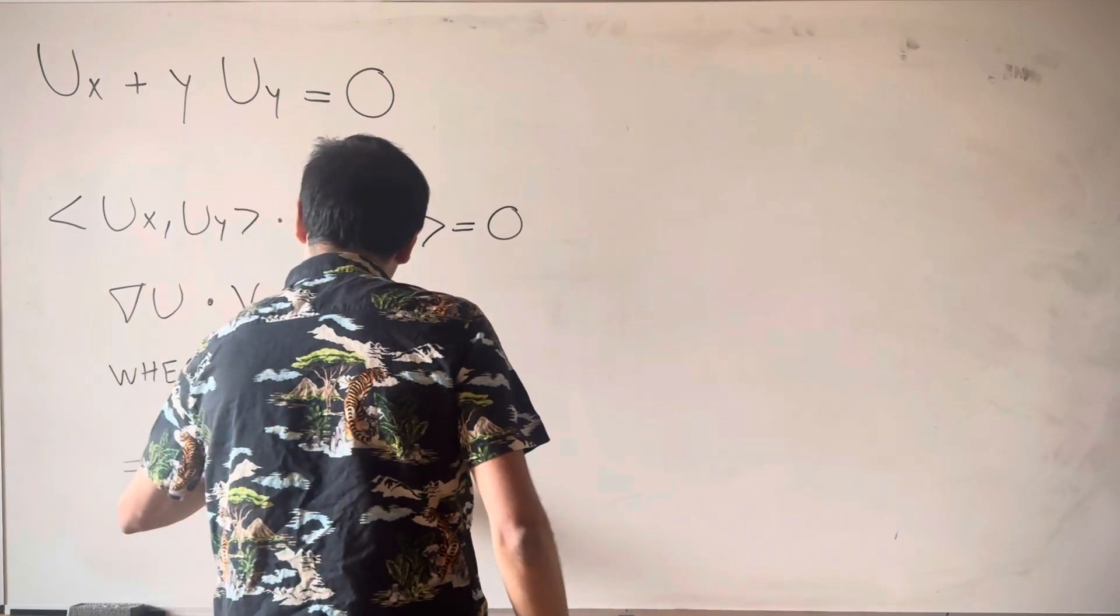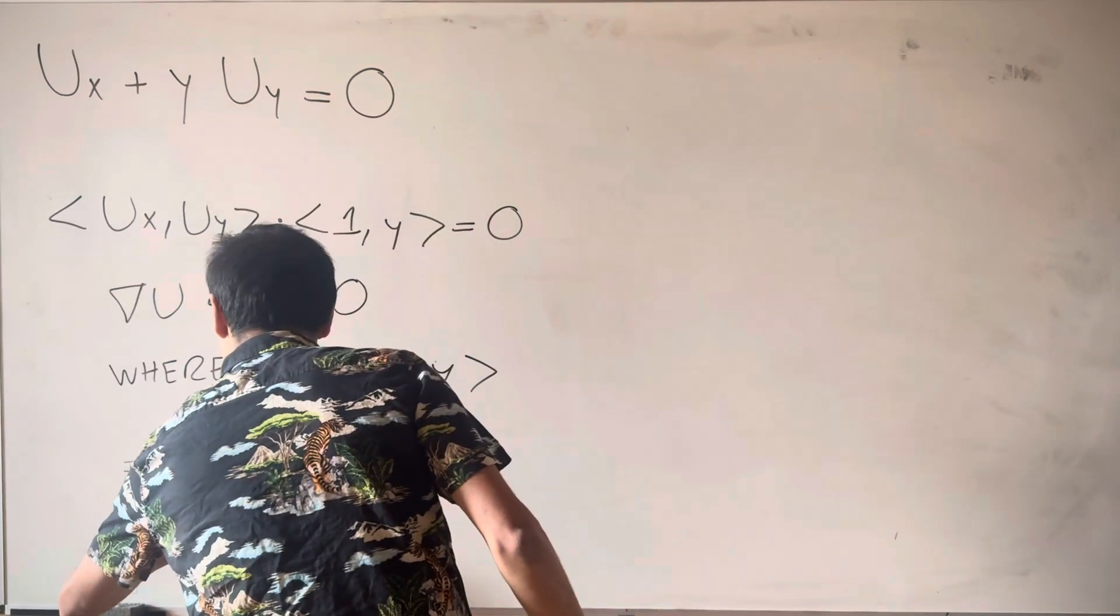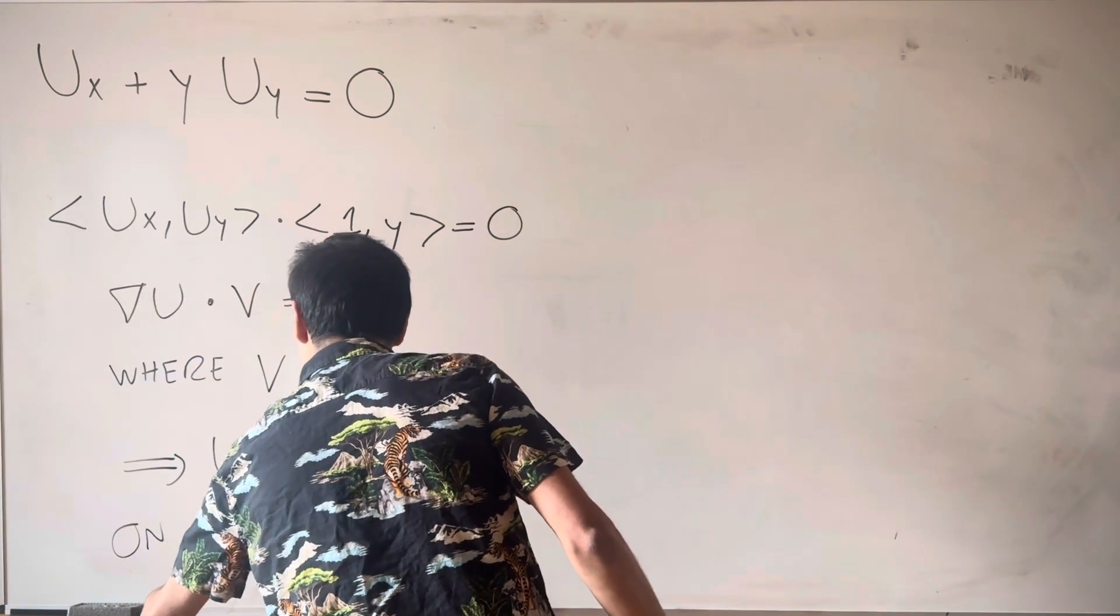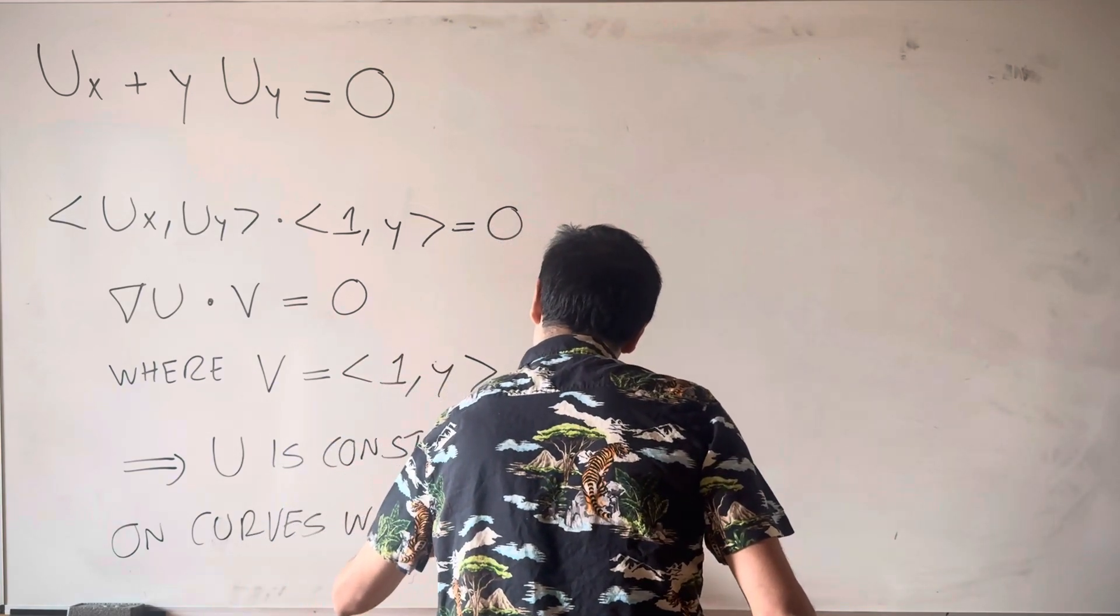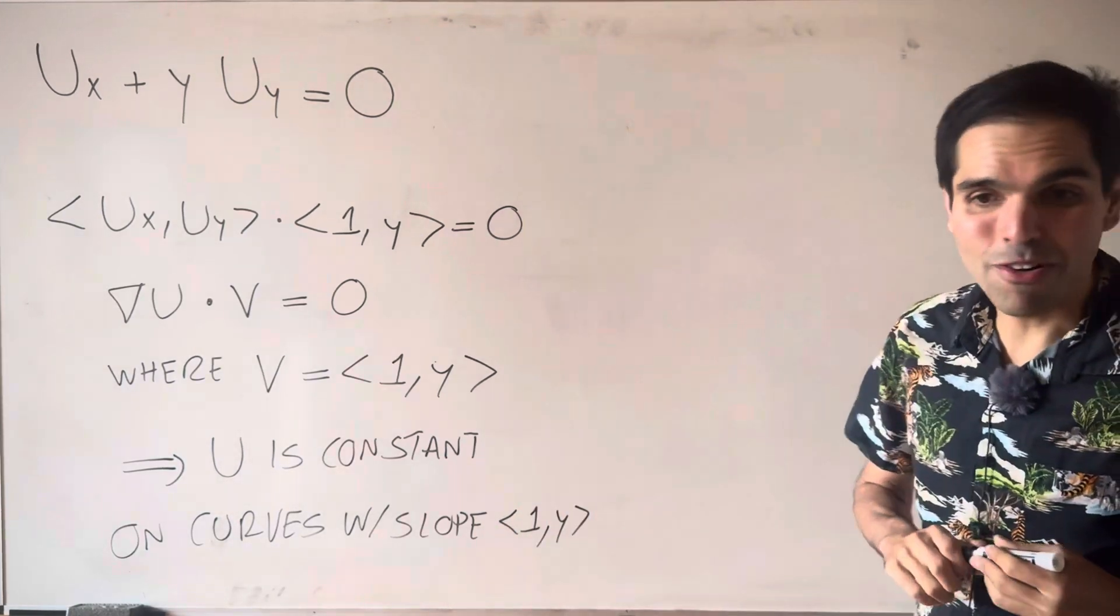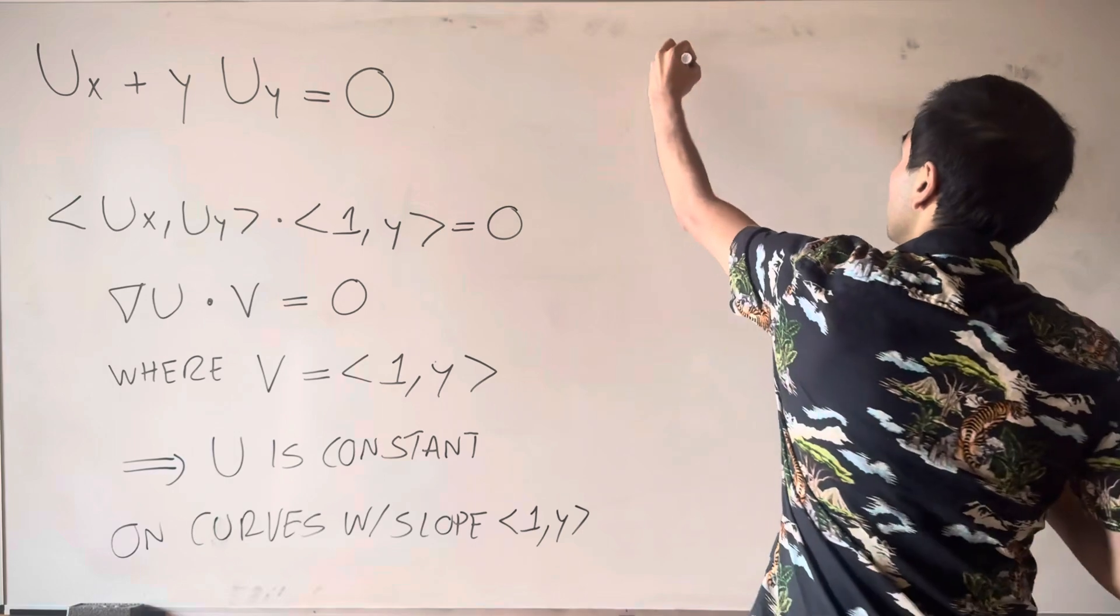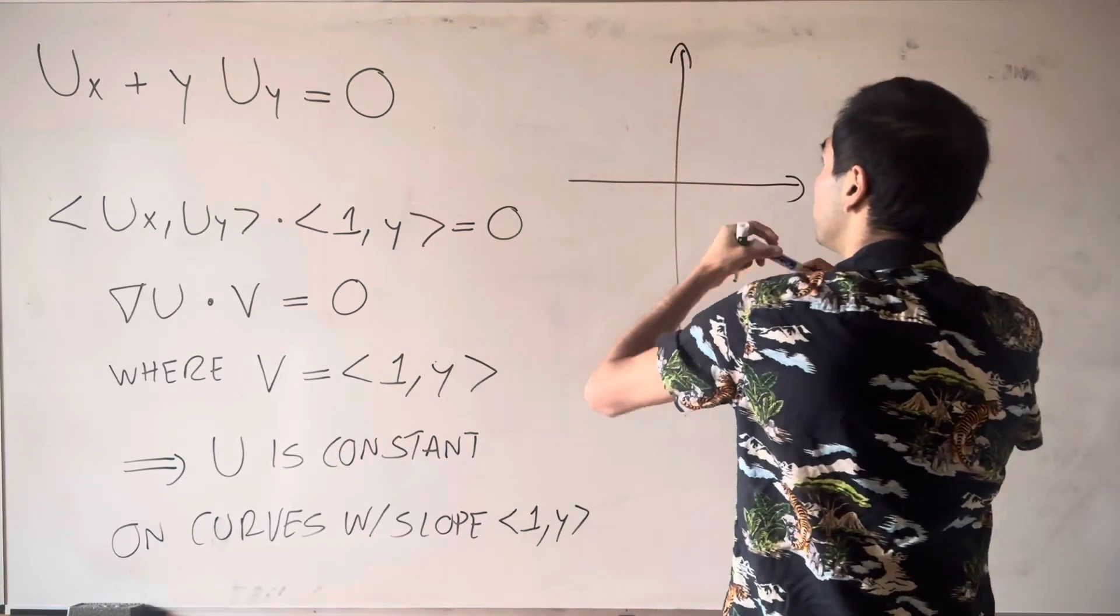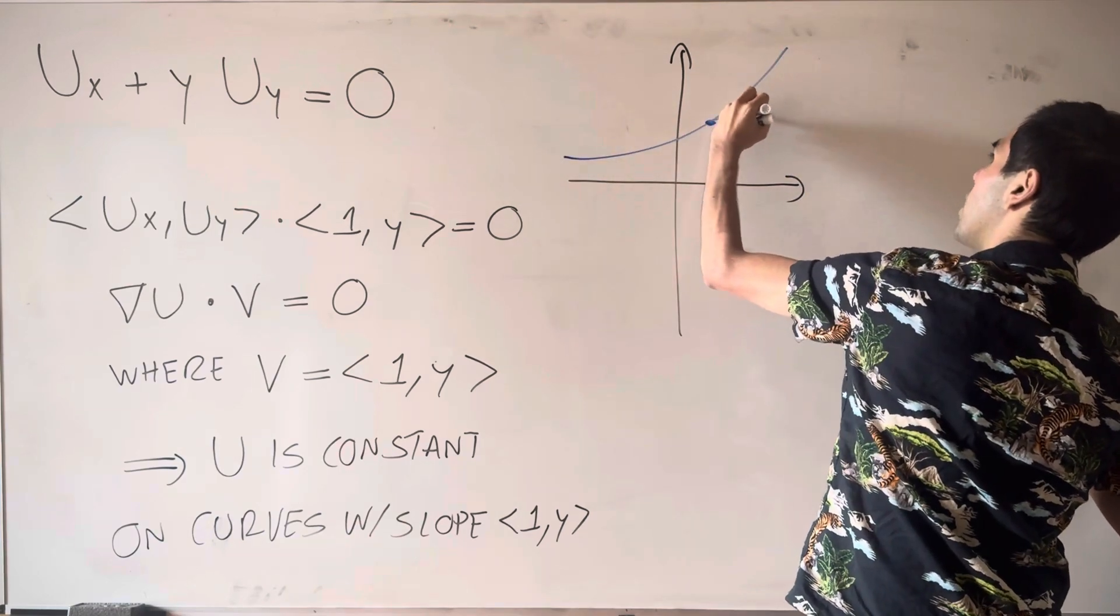So u is constant on curves. So let me draw a couple of pictures of what it looks like. So for instance, and again we will justify this in a second.